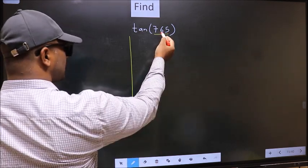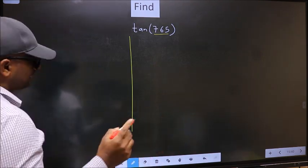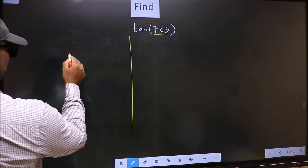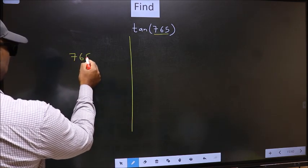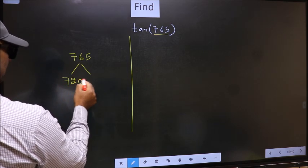What I mean is 765 lies between 720 and 900.